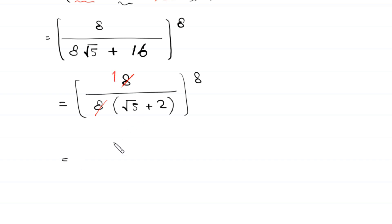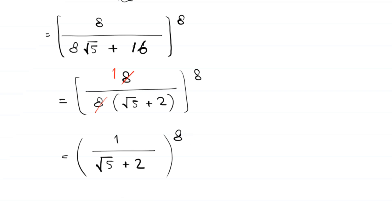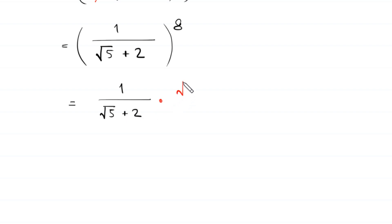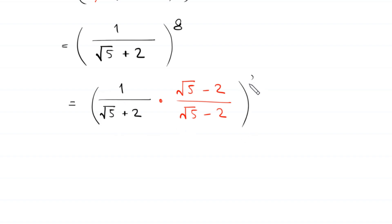So the expression becomes 1 divided by root 5 plus 2, whole to the power 8. Now we rationalize the denominator. We write 1 over root 5 plus 2 and multiply and divide by root 5 minus 2, whole to the power 8.